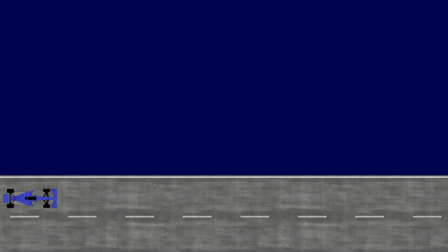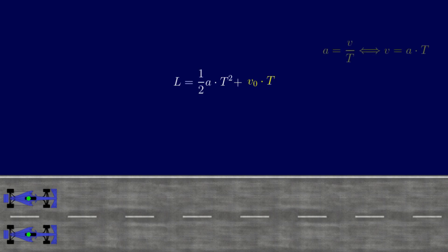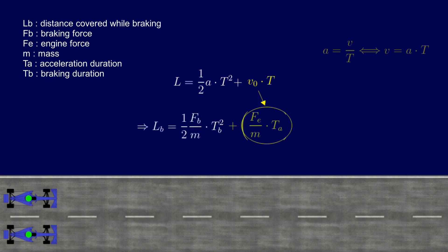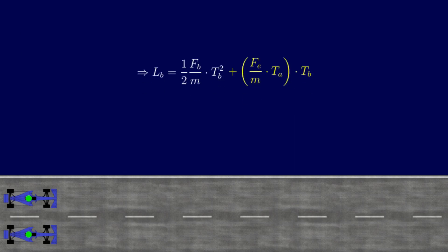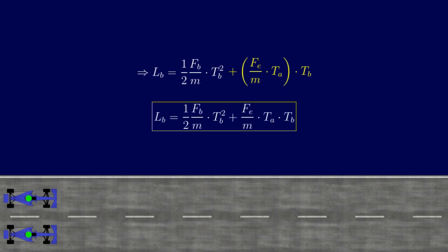Let's perform the same calculation, but for the braking phase that follows the acceleration phase we just discussed. This time, the initial speed is not zero, but is equal to the speed obtained at the end of the previous acceleration. This speed is very simply obtained using the definition of acceleration. As for the value of deceleration, we obtain it thanks to Newton's second law, just as before. Here, Fb represents the force of the brakes. Unfortunately, the formula we retain this time cannot be simplified as much as the previous one, though we will soon get through it.